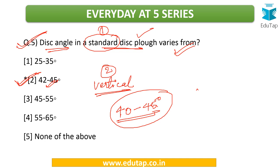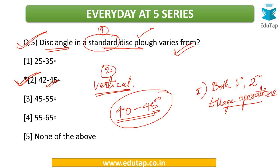The last question for you to attempt is: name one implement that is used for both primary as well as secondary tillage operations. So to quickly revise all your assignments: list implements for primary and secondary tillage, name two blade harrows, tell the depth of water in the puddling operation, and name an implement used for both primary and secondary tillage. Answer all questions in the comment section below.